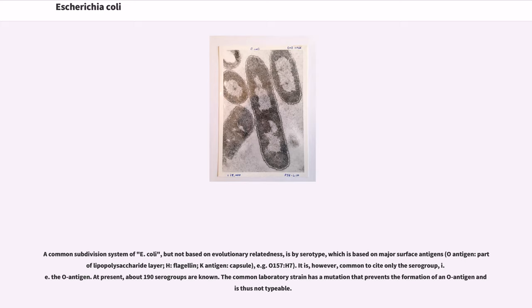A common subdivision system of E. coli, though not based on evolutionary relatedness, is by serotype, which is based on major surface antigens, for example O157:H7. It is, however, common to cite only the serogroup, i.e., the O antigen. At present, about 190 serogroups are known. The common laboratory strain has a mutation that prevents the formation of an O antigen and is thus not typable.